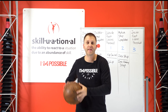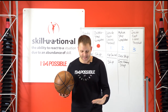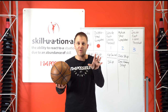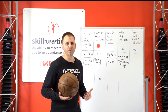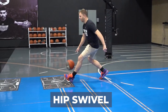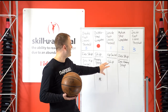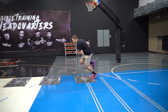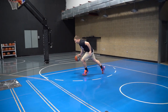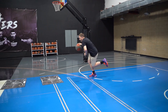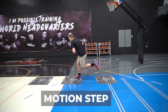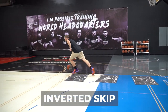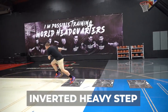Once you've completed your dribble step, your outside foot starts to run and will start to cross the threshold of your inside foot. In between those steps at that very moment, if you're equipped, you'll have the ability to hip swivel and do a late skip. Then you go ahead and complete that motion step — the step between your dribbles. Now while the ball is still in your pocket you have another set of options: you can do an inverted skip or an inverted heavy step.